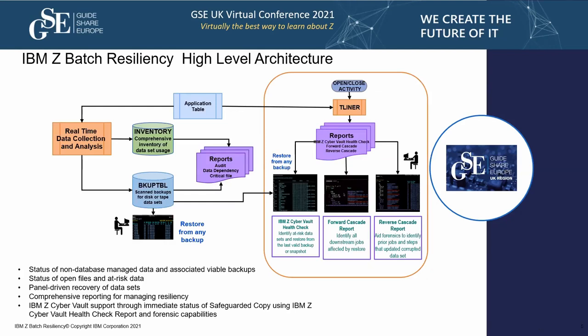IBM Z Batch Resiliency (IZBR) is a product that provides a lot of information through analytics to enable resiliency. Everything is derived from the application table. We have an extractor which extracts the relevant SMF records required for the product. This gets fed into a piece called RTSMF. The core is an inventory dataset containing accesses to particular datasets and which applications they belong to, derived from the application table built from the job scheduling system.